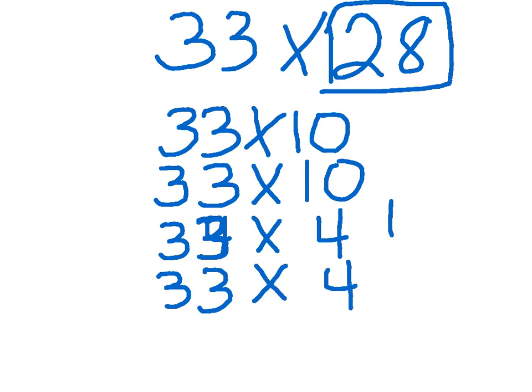This works because we still on this side have 28 thirty-threes, which is what we were looking for in the first place. But it's just much easier for some children to break it apart and find friendly numbers to multiply by.